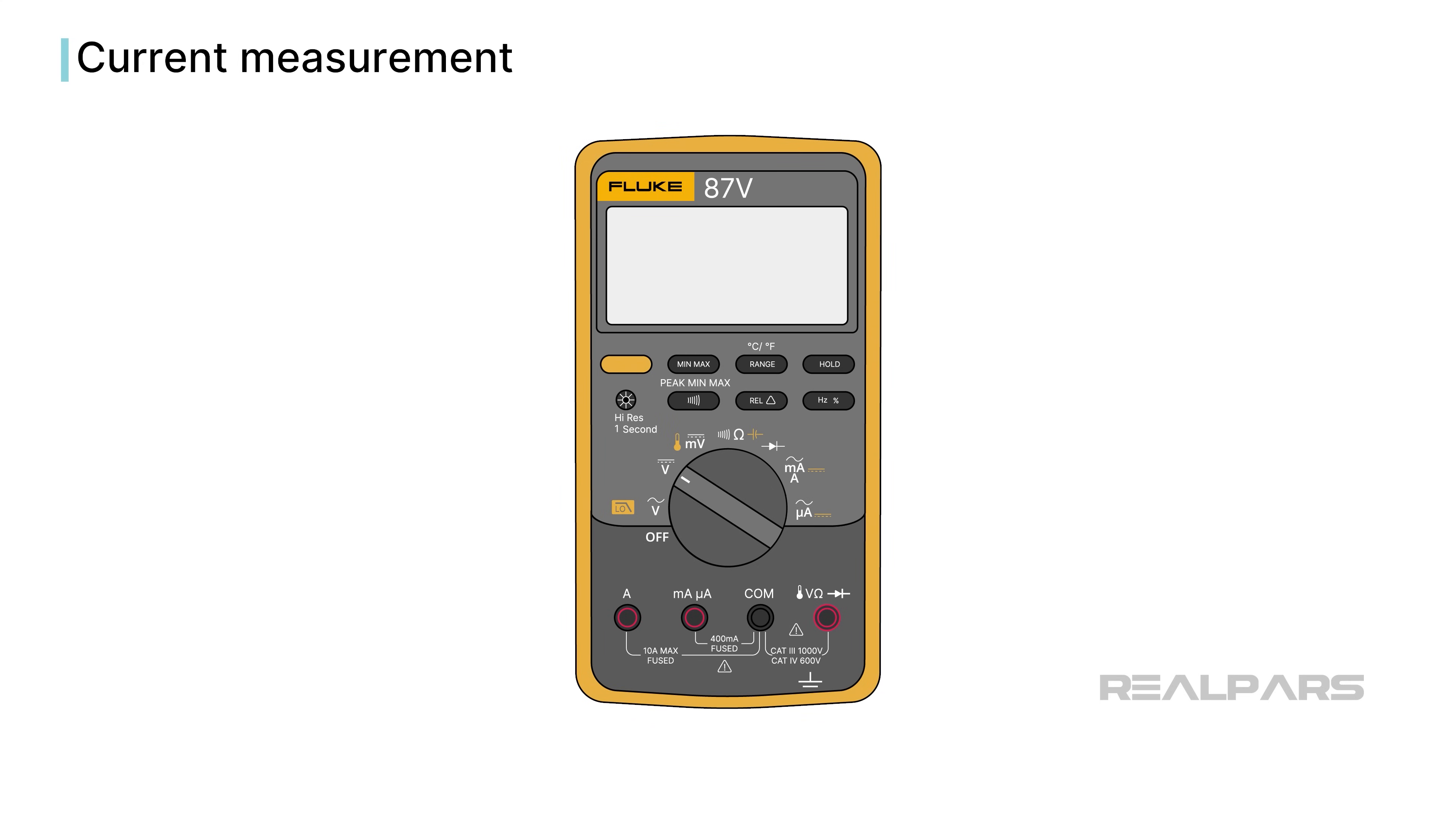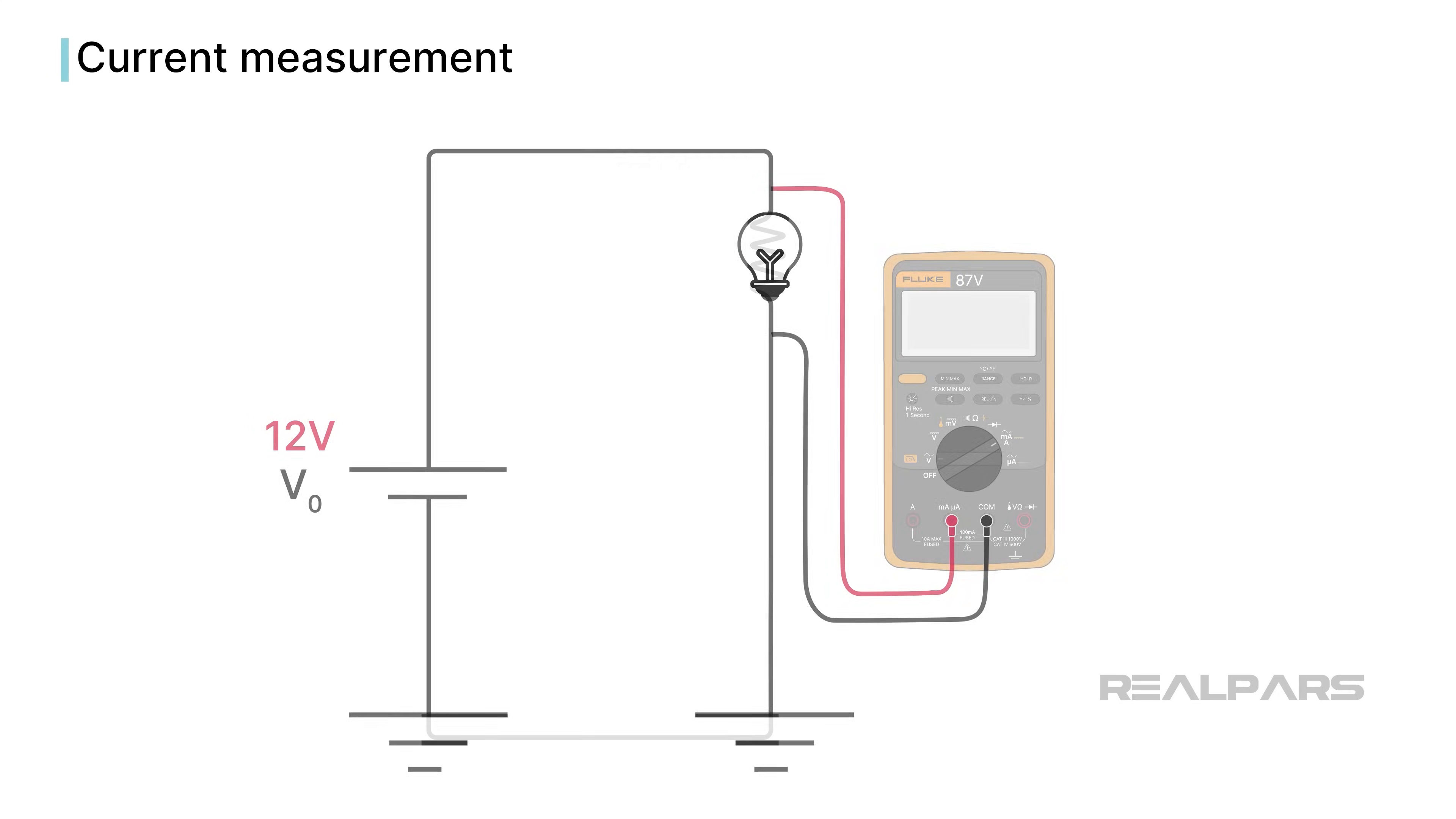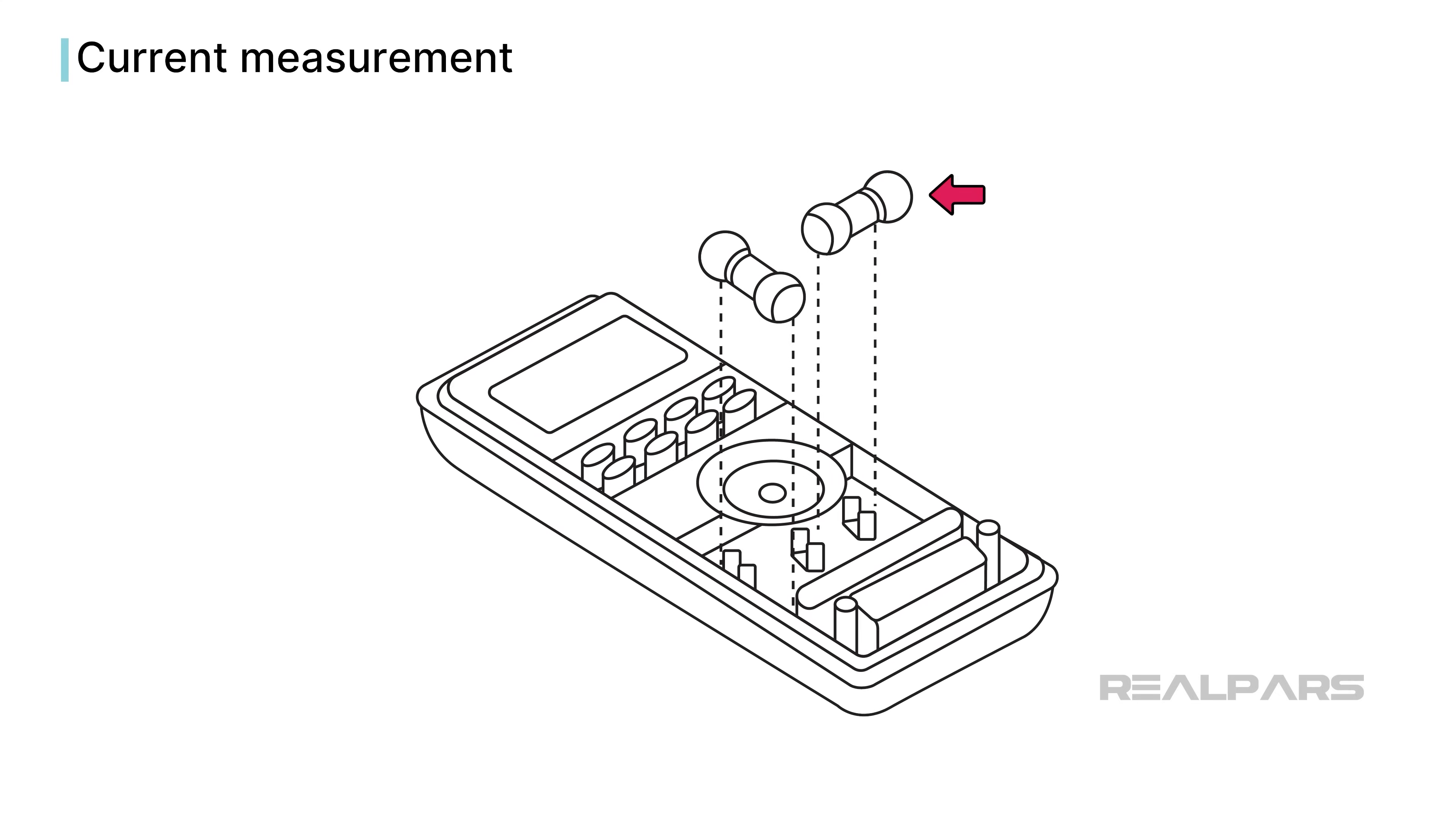Let's move on to current or amperage measurement. Probably 25% of DMMs in the field today cannot measure current because an internal fuse is blown. What's the explanation for the blown fuse? At some time the meter was incorrectly used to measure amperage.